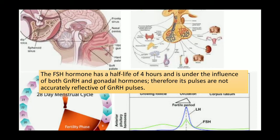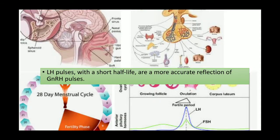FSH has a half-life of four hours and is under the influence of both GnRH and gonadal hormones, so its pulses are not accurately reflective of GnRH pulses. LH, however, has a shorter half-life, making LH pulses a more accurate reflection of GnRH pulses.